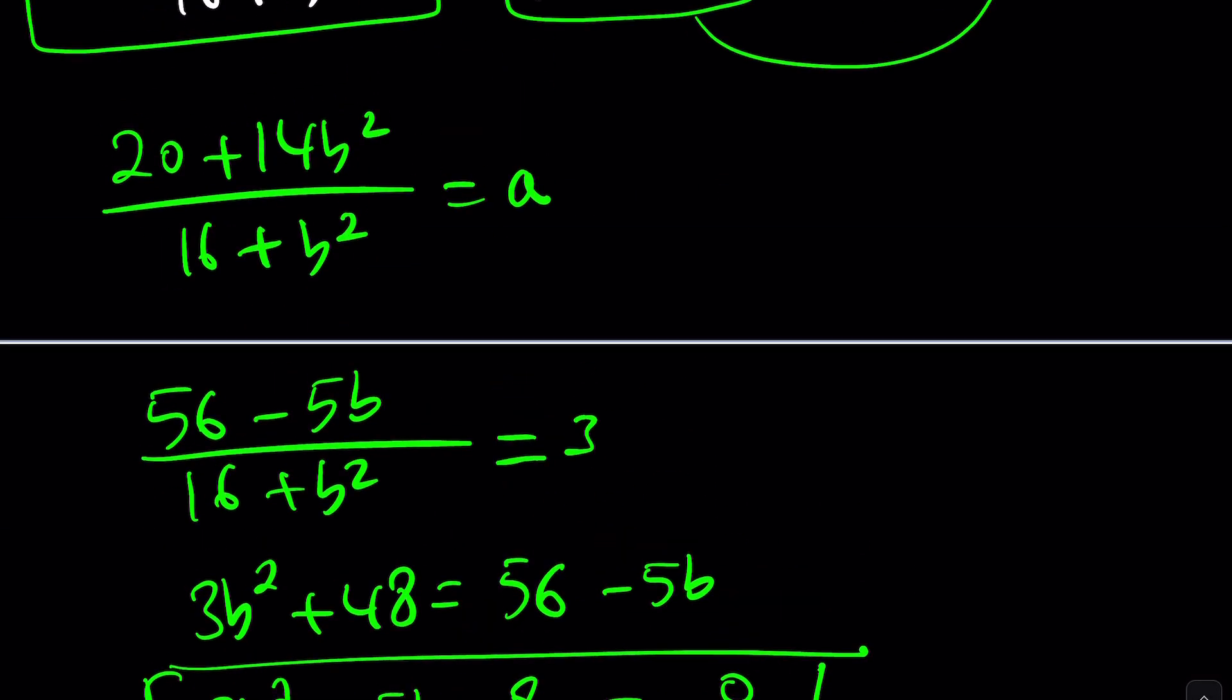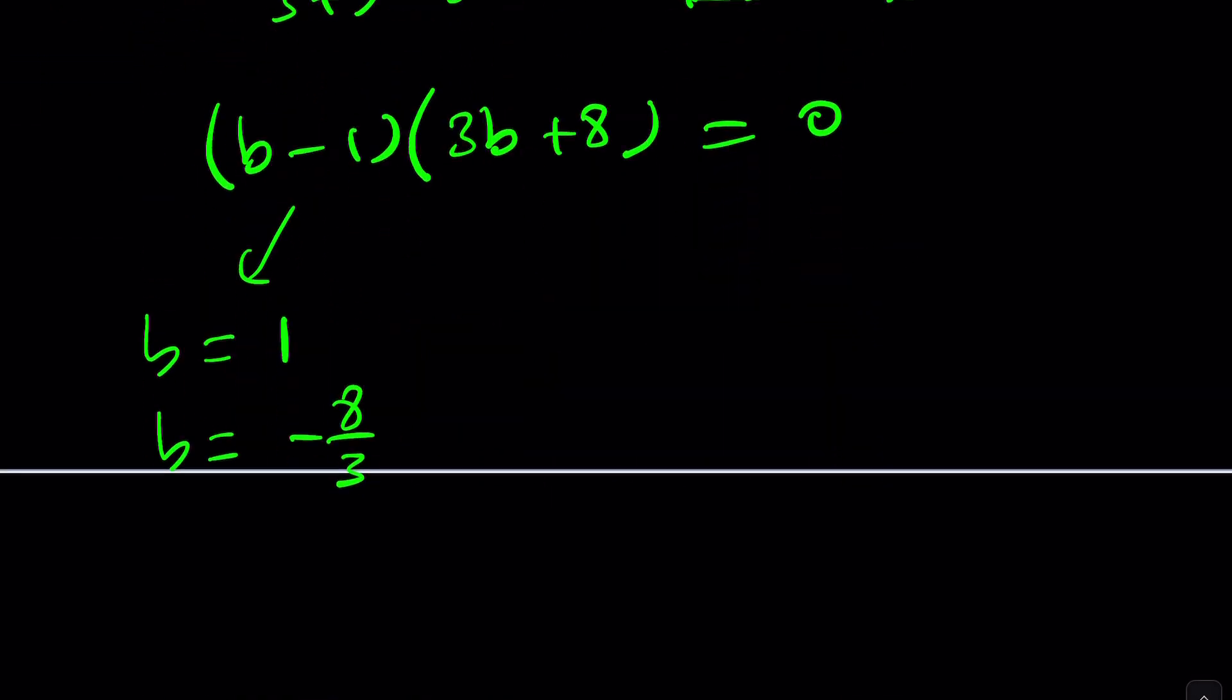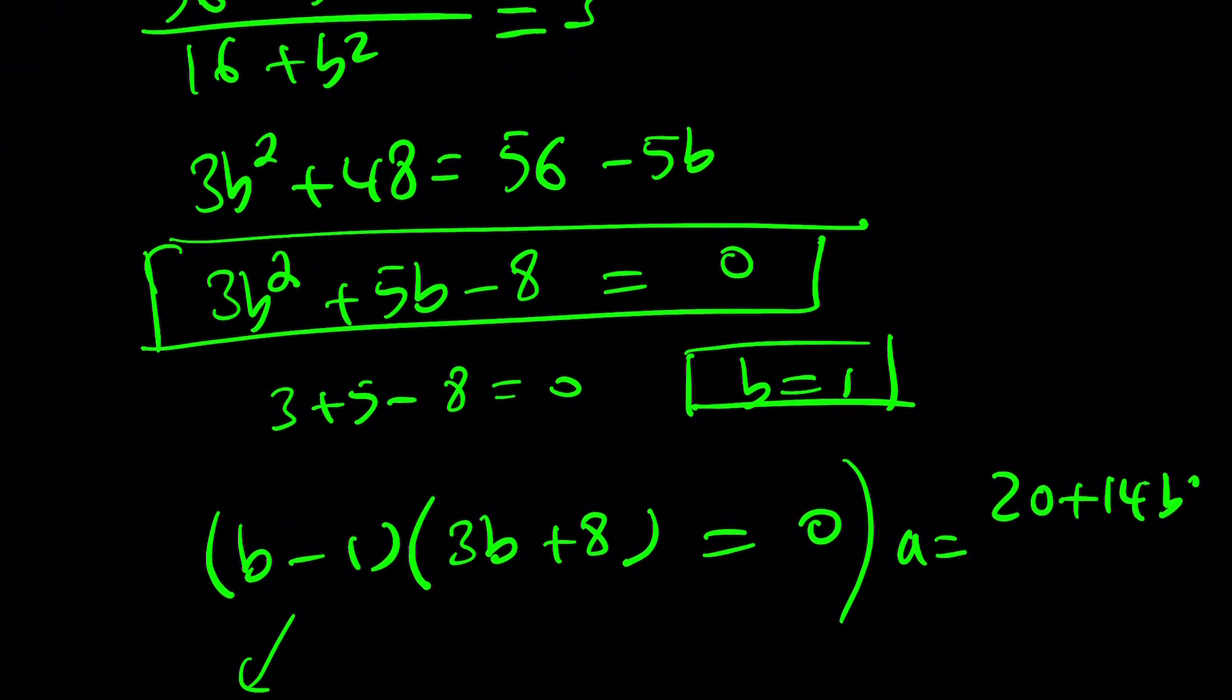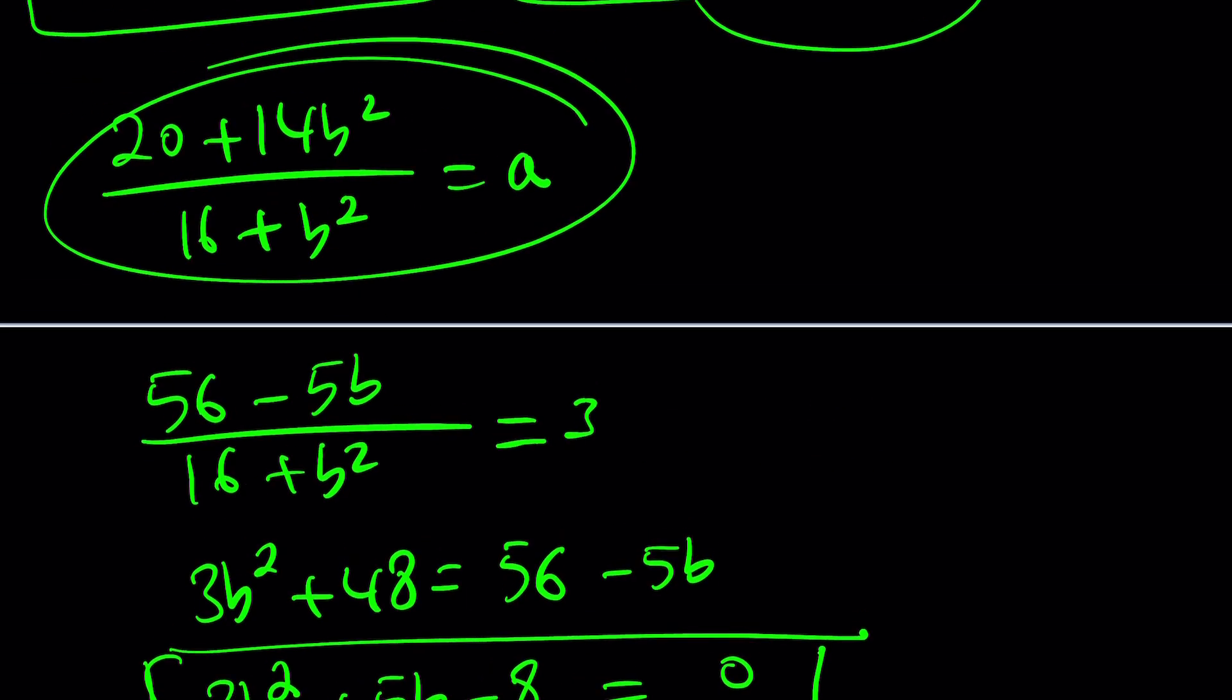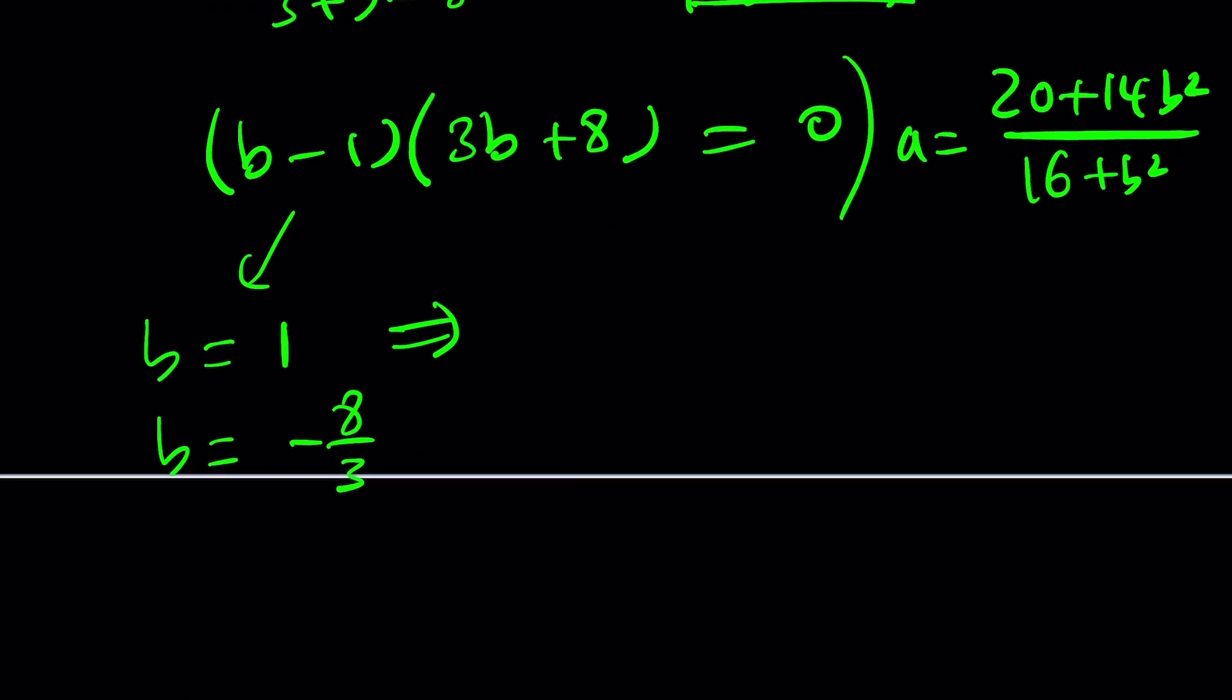But wait a minute. This is not the end of the story because we have another equation to solve. a equals 20 plus 14b squared divided by 16 plus b squared. Now we can plug it in. If b is 1, a is going to be 20 plus 14, which is 34, divided by 16 plus 1, which is 17, and a is equal to 2. That's super nice.